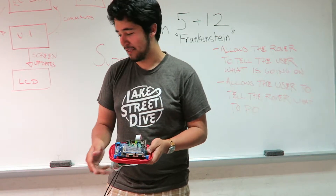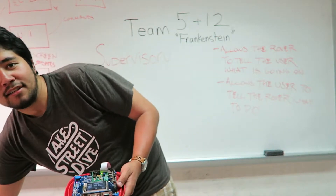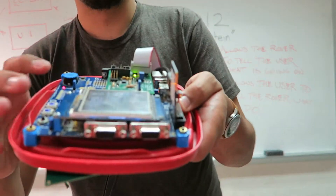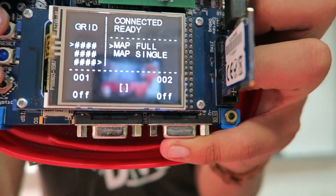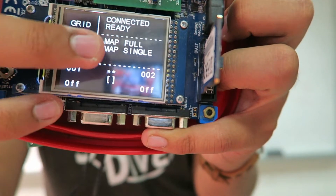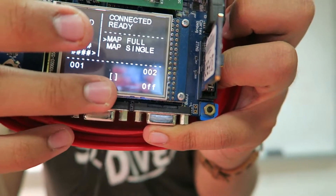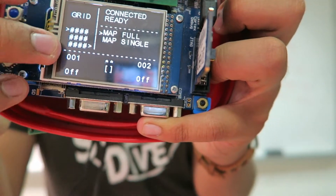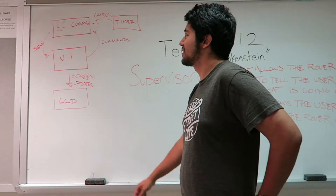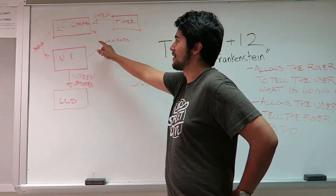The basic interface looks roughly like this. There is a grid, then a menu, and then a graph of the sensor output from the rover. In software, this is implemented as a series of tasks.